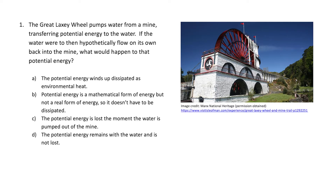The correct answer is A. The potential energy winds up dissipated as environmental heat. Energy has to be conserved, so when the water loses its potential energy, that energy winds up typically as kinetic energy. The water gains speed as it flows back into the mine. But once it stops moving, the kinetic energy gets transferred to whatever particles it collides with as it's slowing down. Water molecules slow down, but the little particles of the dirt start moving faster.